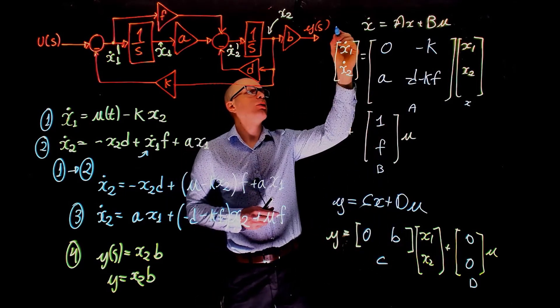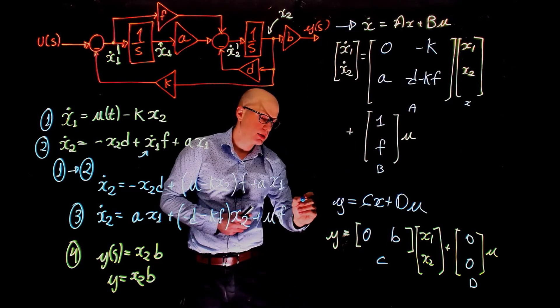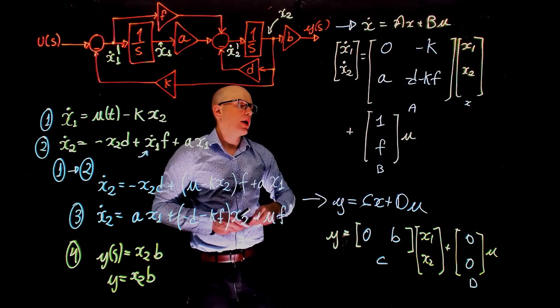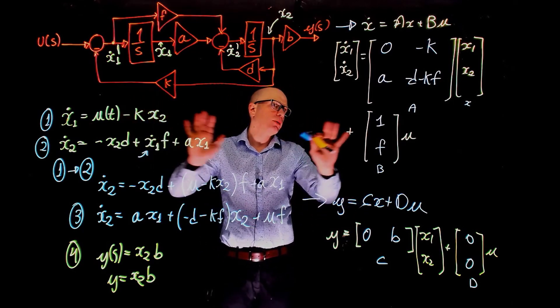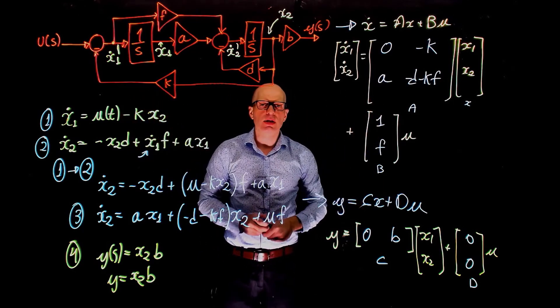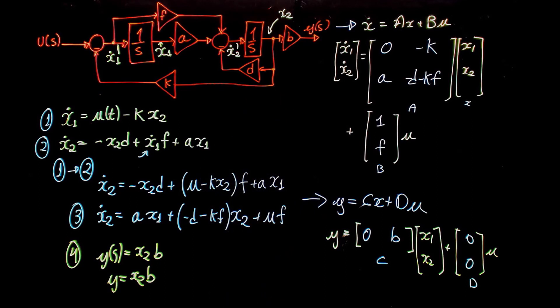And here we are, the first equation for state-space is there. The second equation is here. And now we have a full model of this block diagram now represented in state-space form. There it is. And here we go.